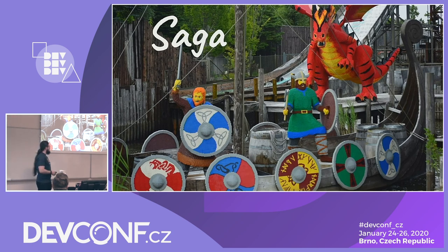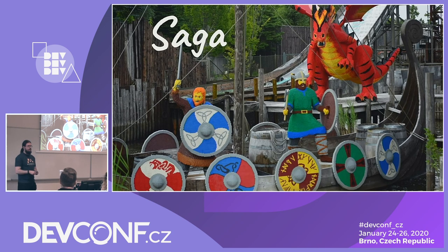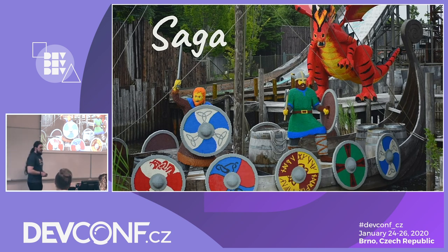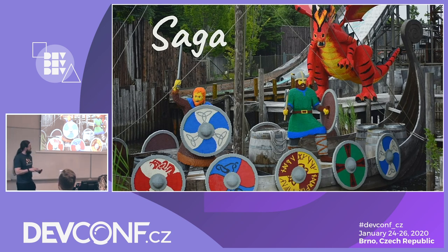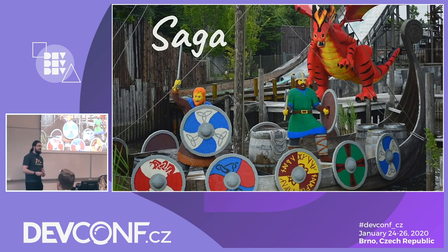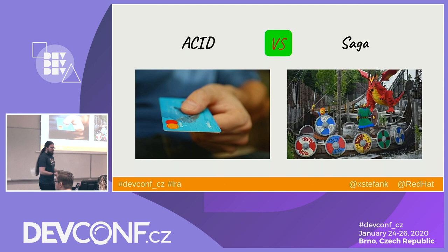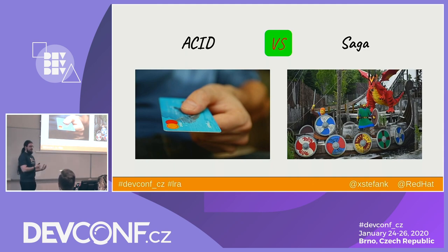However, you came here today to hear about something different, and that something different is called a saga. We will get to what it is, but I would like to show you the implementation we are working on in MicroProfile, which is called Long Running Actions, or LRA in short. To start just typing is really hard to comprehend, so I will do 15 minutes of theory and then we will jump to the IDE.